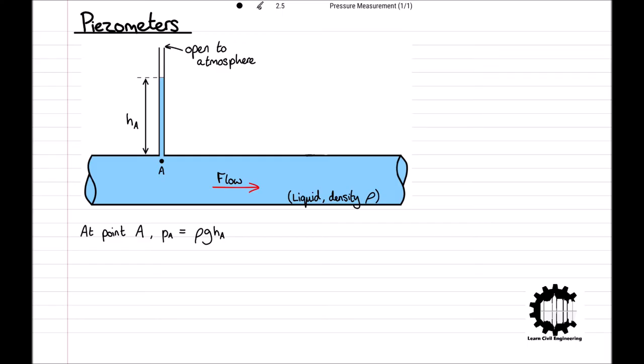A second piezometer can be inserted at some point B that is downstream of A. Again the liquid at B rises up the second tube to form a column of liquid with height h_b and the gauge pressure p_b at the base of the column which is at point B is p_b equals rho g h_b.